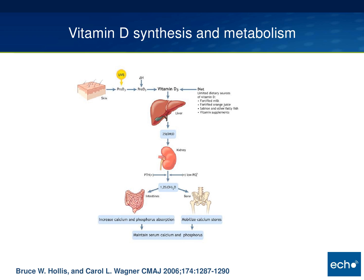Both vitamin D2 and D3 are biologically inert and need to be hydroxylated. They first get hydroxylated in the liver by the 25-hydroxylase enzyme and get converted to 25-hydroxy vitamin D—the major circulating form. It then undergoes active hydroxylation by 1-alpha hydroxylase in the kidneys to become the active form: 1,25-dihydroxy vitamin D, the biologically active form of vitamin D.